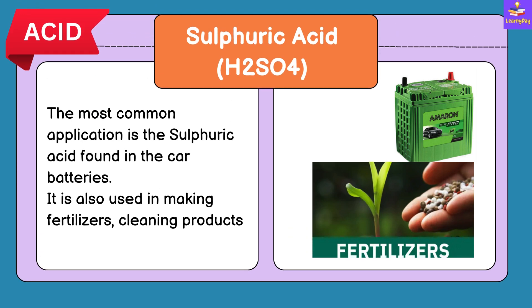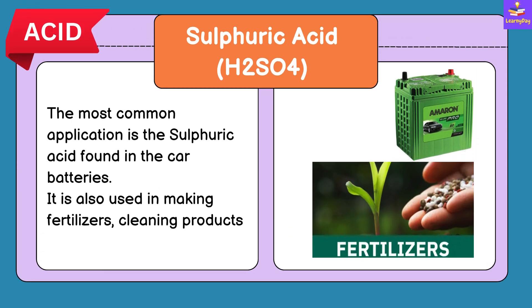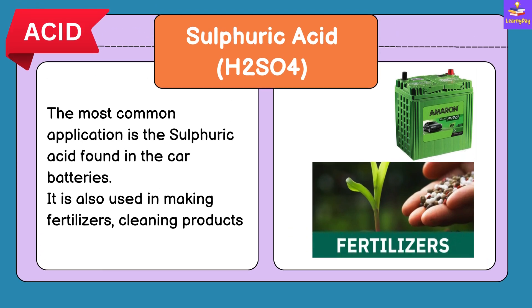The last example of acids is Sulphuric Acid. The most common application is sulphuric acid found in car batteries, and it is also used in making fertilizers and cleaning products.